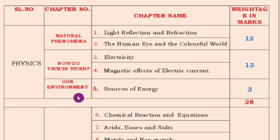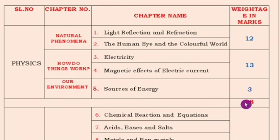The next topic is our environment, covering the source of energy — a very important lesson for students. For that lesson, 3 marks are allocated. Together for physics you will get 28 marks.